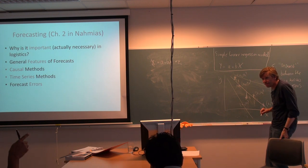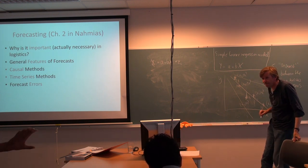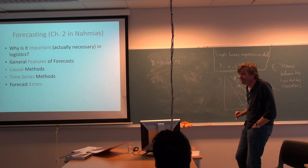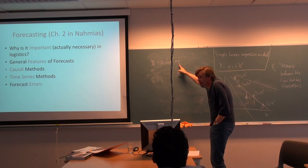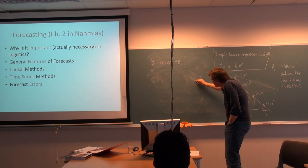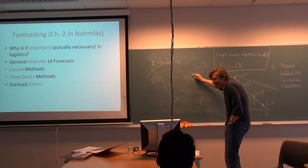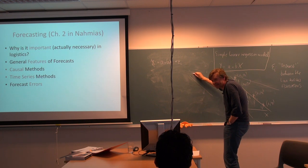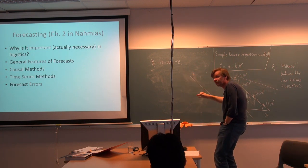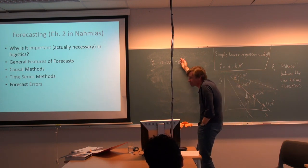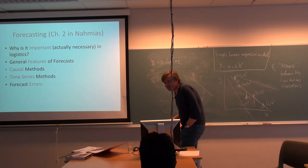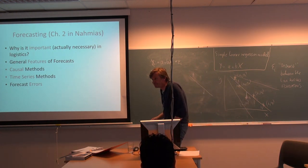A student asks for clarification about the epsilon being positive or negative. The point is that when you have a line, you must allow for the fact that a missing observation could lie either on top of the line or below it. If it's on top, you have to add the distance to get there; if it's below, you have to subtract it. That is the reason why epsilon could be positive or negative. And with that, it's time for a break.